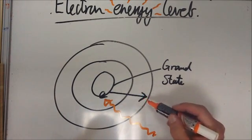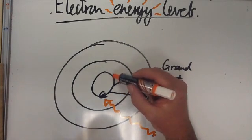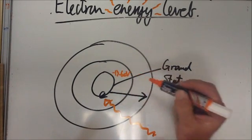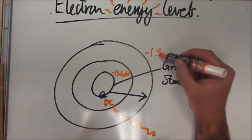Now it will only absorb a photon that is equal to the energy difference here. So let's say this is worth minus 13 electron volts and this level up here is worth minus 1.5 electron volts.